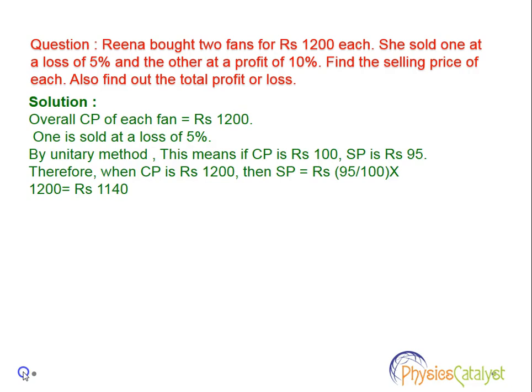The overall cost price of each fan is rupees 1200. One fan is sold at a loss of 5%. By the unitary method, if cost price is 100 then selling price will be 95. Therefore, when cost price is 1200, the selling price will be given by 95 divided by 100 into 1200.